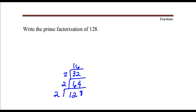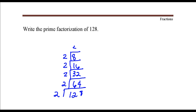I'm going to keep doing this process until the quotient up here is a prime number, and that's how you know you're done. 16 is divisible by 2. 8 is divisible by 2. 4 is divisible by 2. And that's it. The quotient up here is a prime number, and that's when we know to stop.